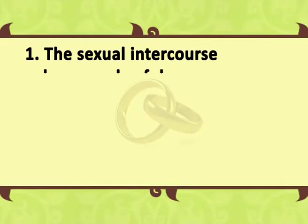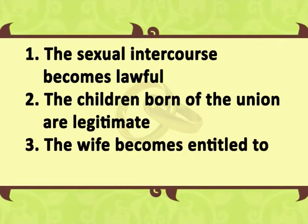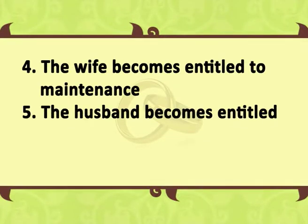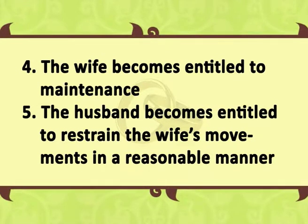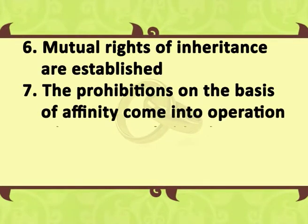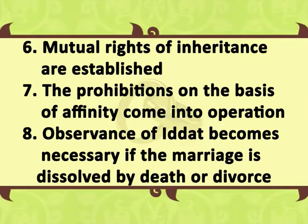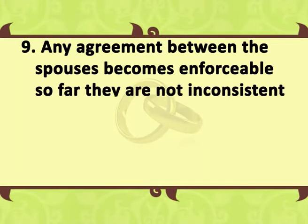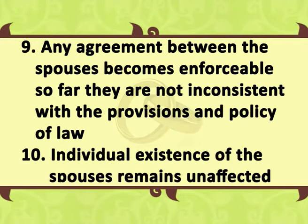The effects of a valid marriage may be summarized as: sexual intercourse becomes lawful; children born of the union are legitimate; the wife becomes entitled to dower; the wife becomes entitled to maintenance; the husband becomes entitled to restrain the wife's movement in a reasonable manner; mutual rights of inheritance are established; prohibitions on the basis of affinity come into operation; observation of idat becomes necessary if the marriage is dissolved by death or divorce; any agreement between the spouses becomes enforceable so far as they are not inconsistent with the provisions and policy of law; and individual existence of the spouses remains unaffected.